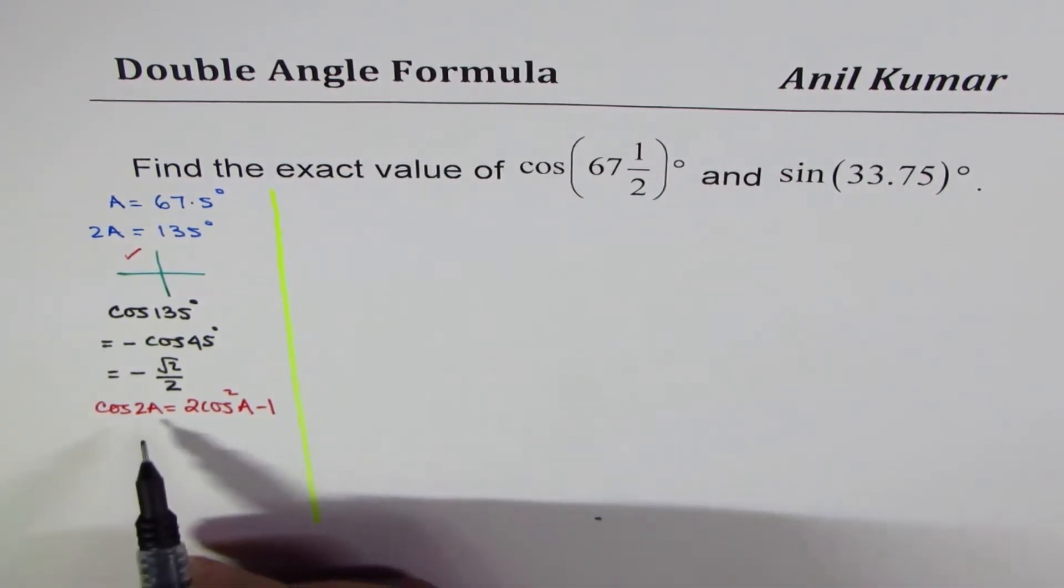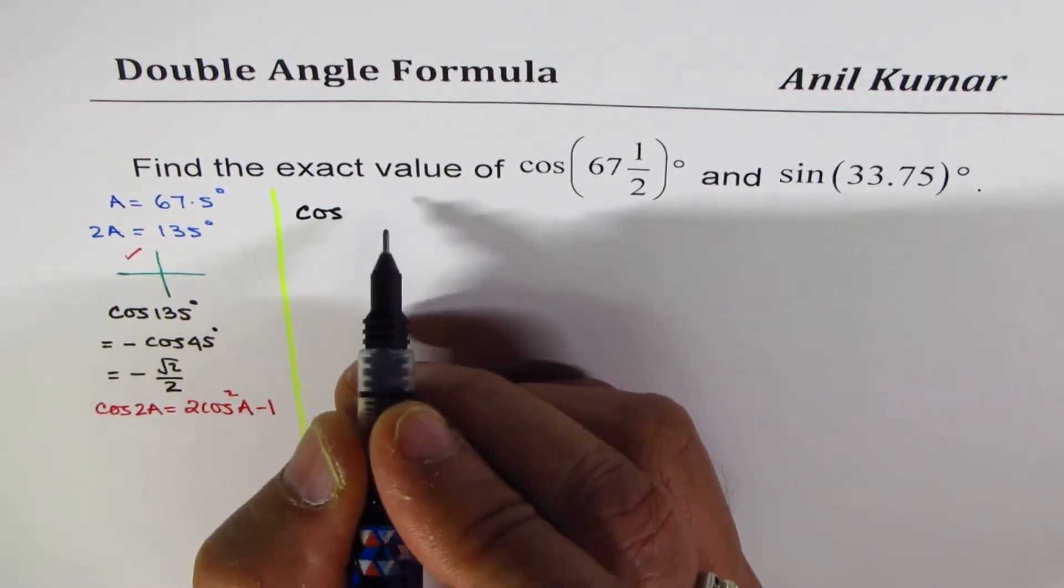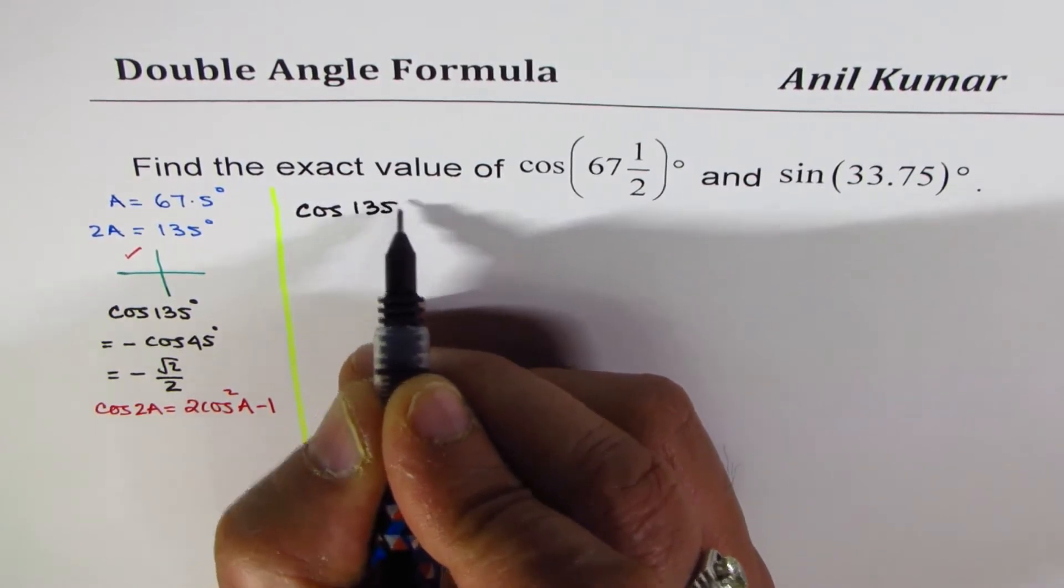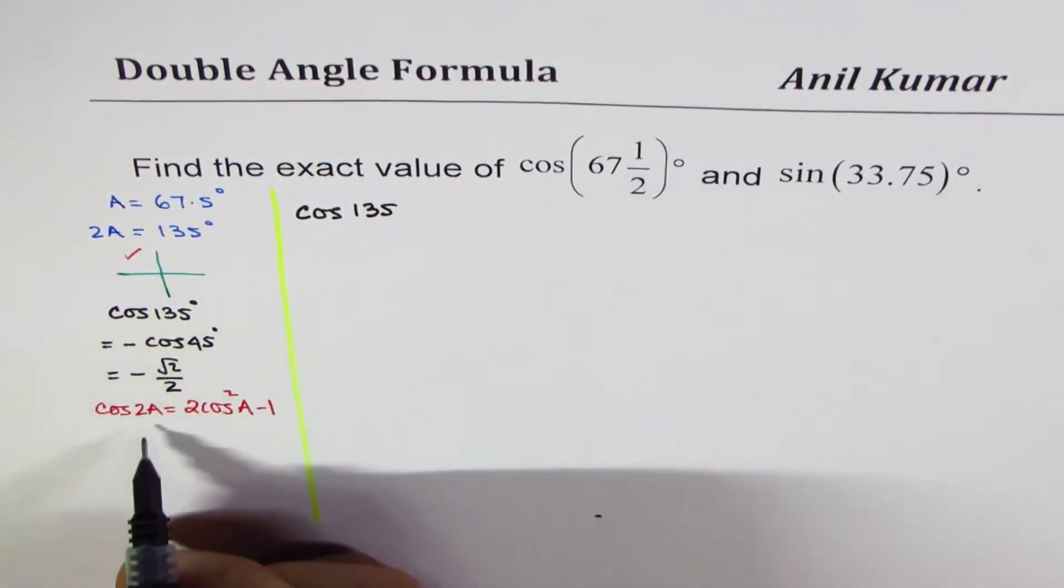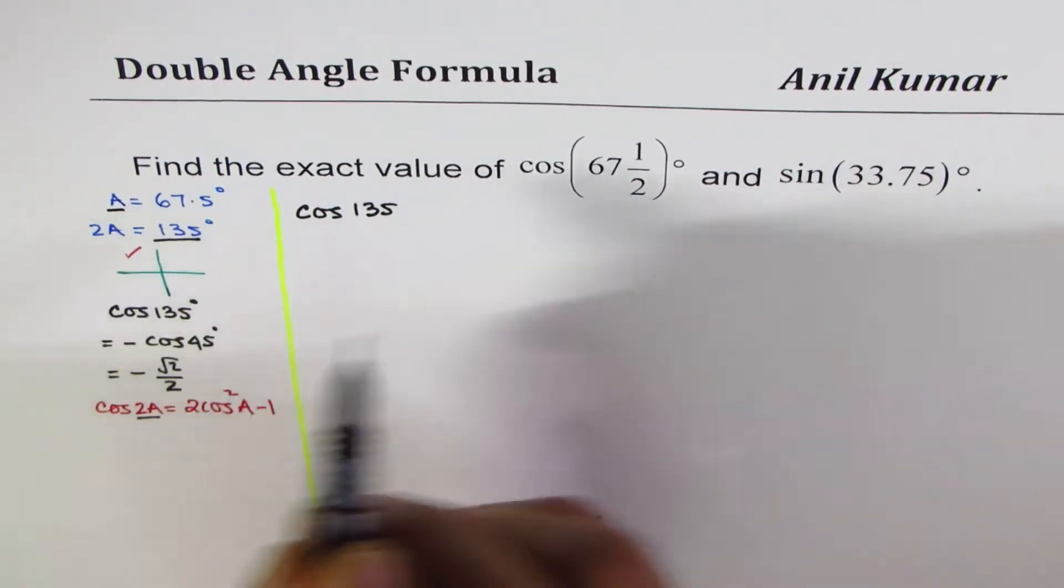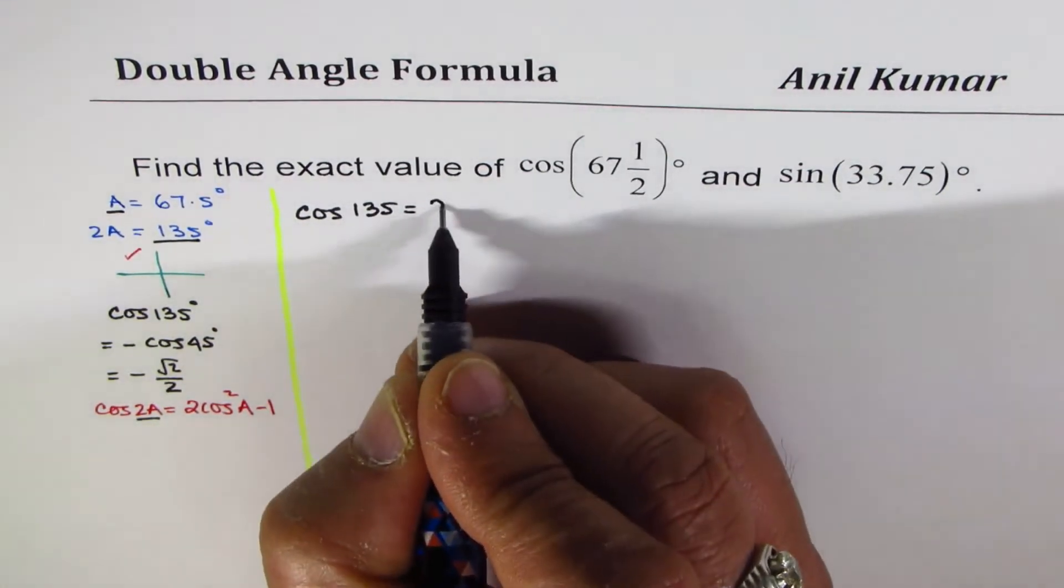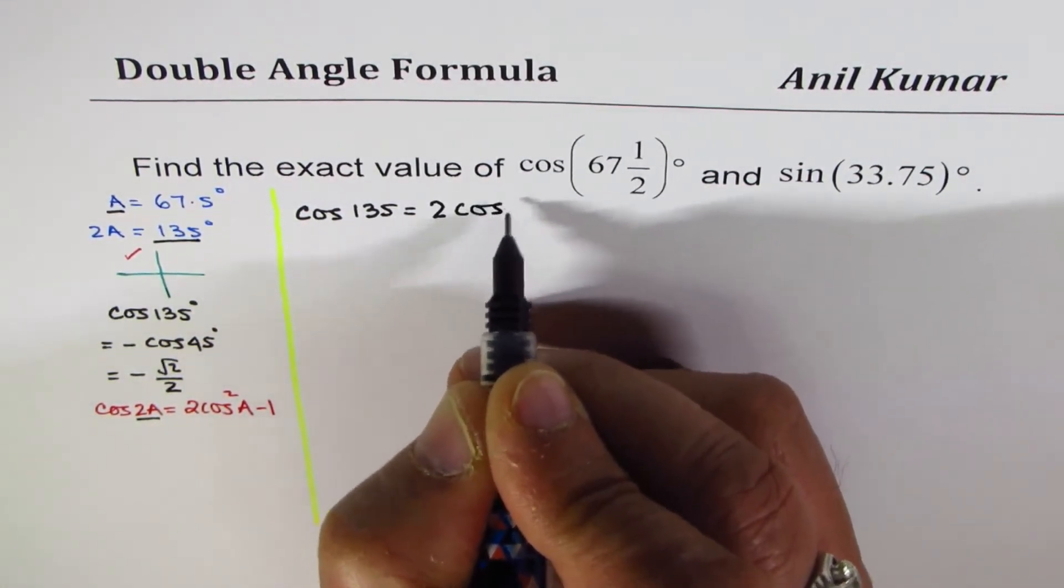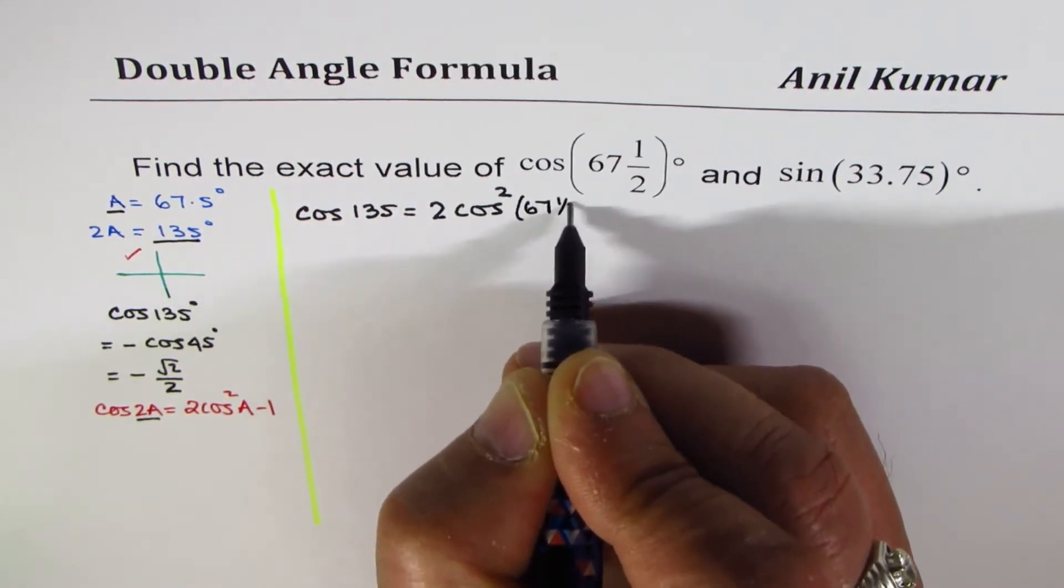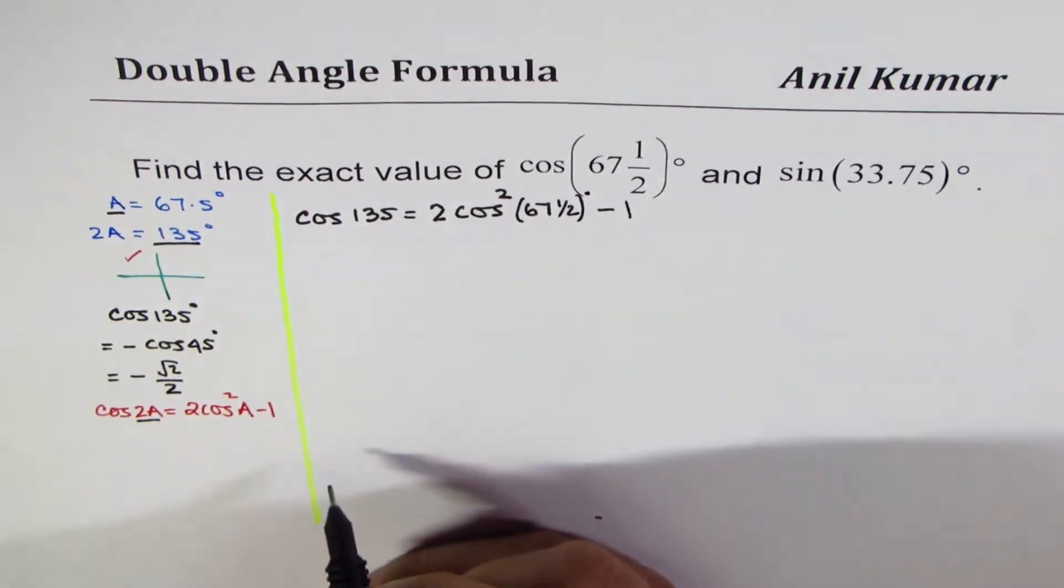So I'll begin by writing the expression as cos of 135, which is twice this. So I'm using 2A as 135, and therefore A is 67.5. Applying this formula, I could write this as 2 cos square 67.5 degrees minus 1.